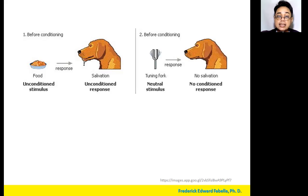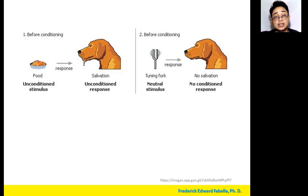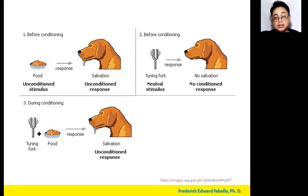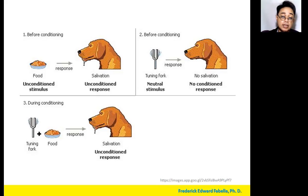So what did Pavlov attempt to do? He got a tuning fork, which is a neutral stimulus, and of course when the dog is presented with the tuning fork, there is no salivation — no conditioned response. In order for conditioning to occur, simultaneous to the feeding of the dog, the tuning fork was sounded. So the dog was able to associate repeatedly the food with the tuning fork, and the tuning fork became a signal that the dog was about to be fed.